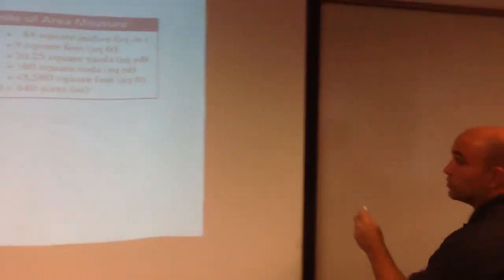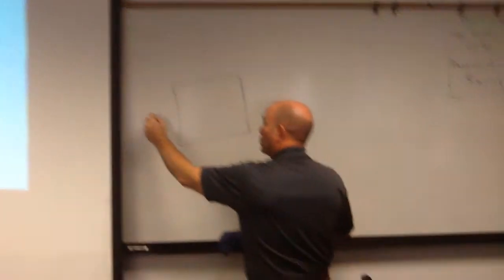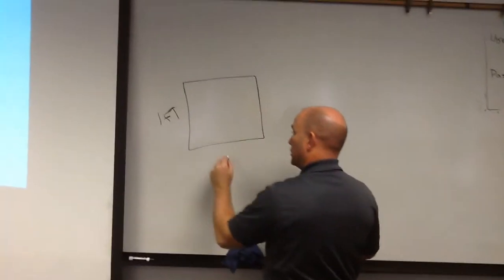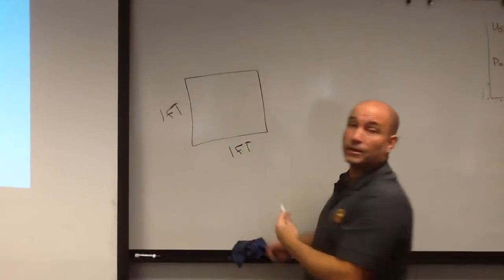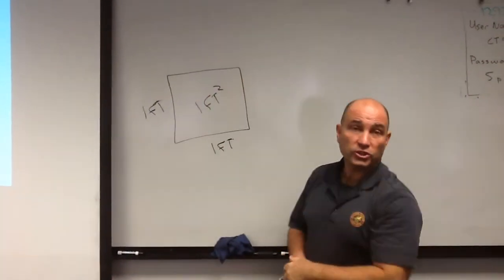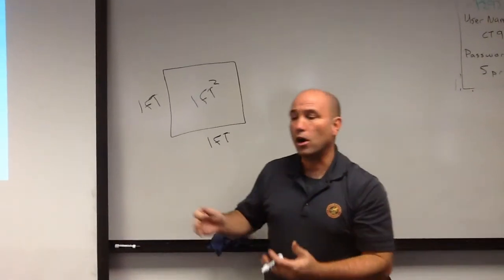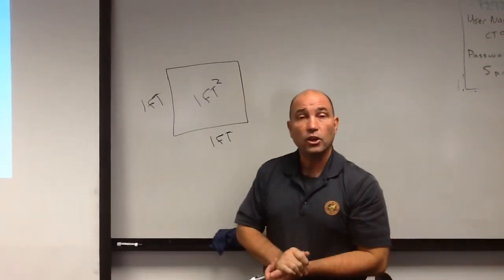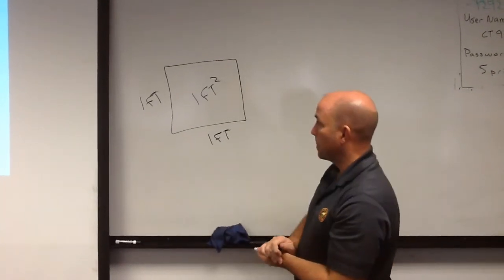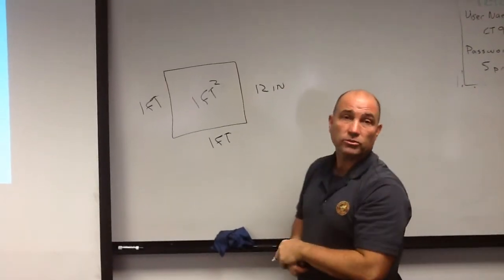Let's come over here to the board. We know we have one foot times one foot. That's one square foot, right? One foot squared. And that's area. So, every time we're talking about drywall or flooring or the ceiling, we're talking about area. We also know that one foot is the same as 12 inches, right?